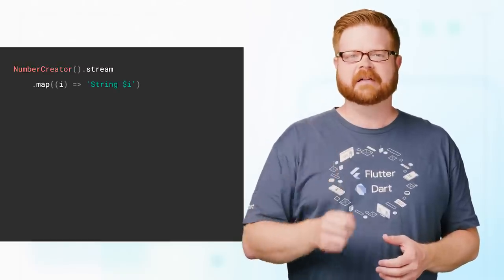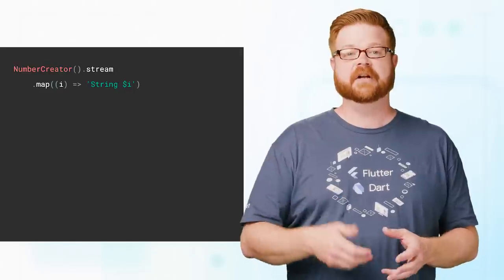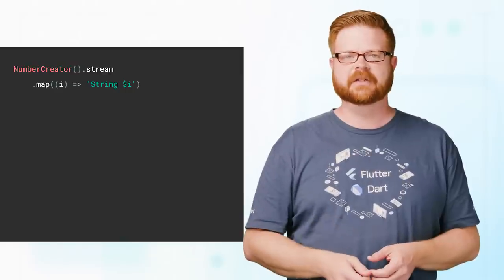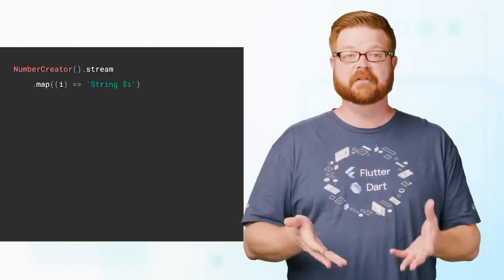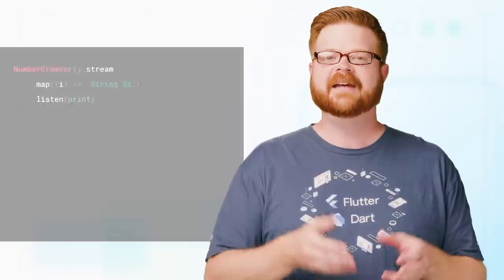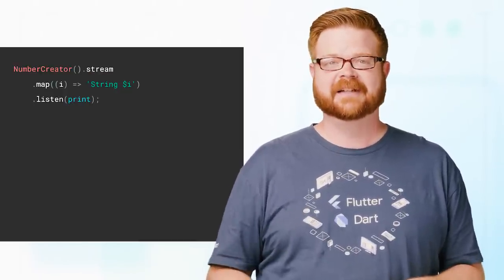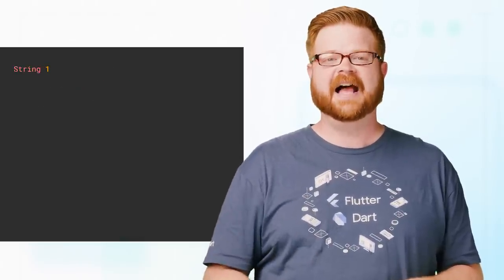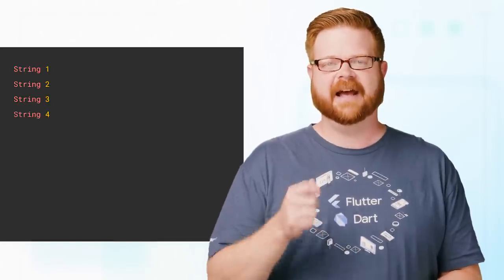I can use a method called map to take each value from the stream and convert it on the fly into something else. I give map a function to do the conversion, and it returns a new stream typed to match the return value of my function. Instead of a stream of ints, I now have a stream of strings. I can throw a listen call on the end, give it the print function, and now I'm printing strings directly off the stream, asynchronously as they arrive.